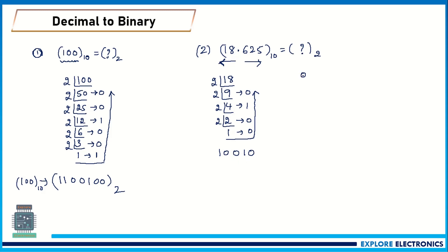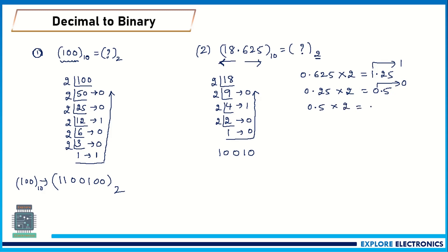For the fractional part 0.625, we multiply by 2 repeatedly. 0.625 × 2 = 1.25 — take the 1, carry 0.25. 0.25 × 2 = 0.50 — take the 0, carry 0.5. 0.5 × 2 = 1.0 — take the 1, nothing remains. We read these digits from top to bottom, giving us 0.101.